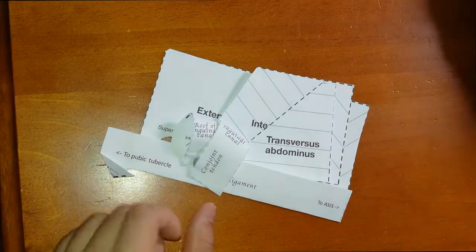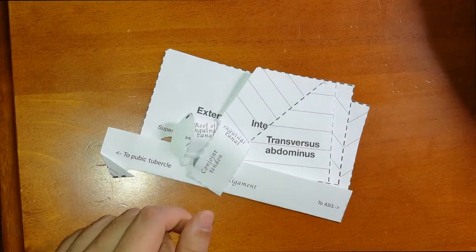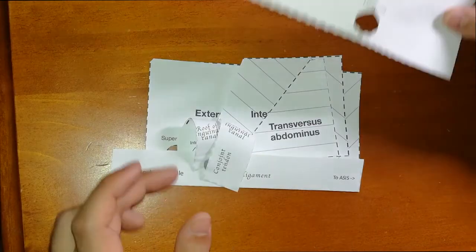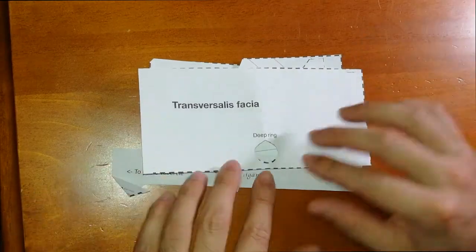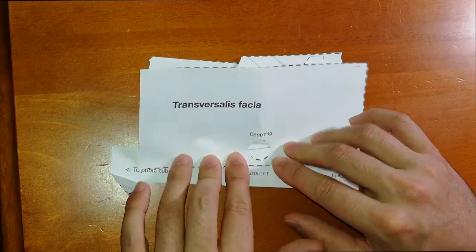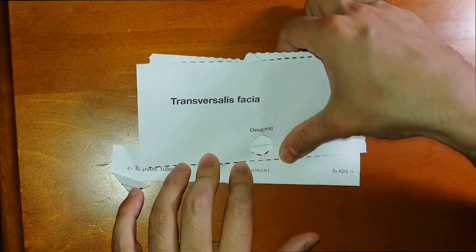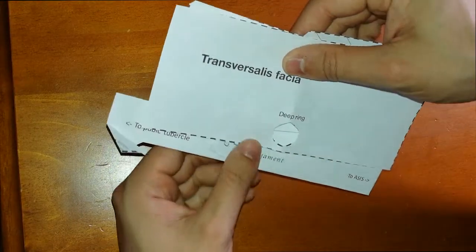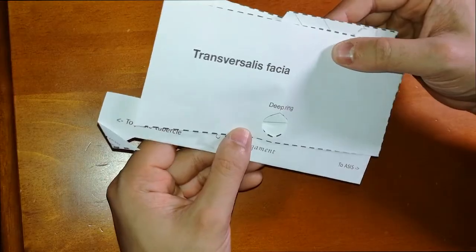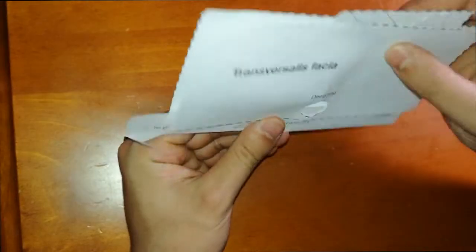The last component of the inguinal canal is the deepest structure, the transversus fascia. The deep ring penetrates the transversus fascia, so that's essentially your built inguinal canal.